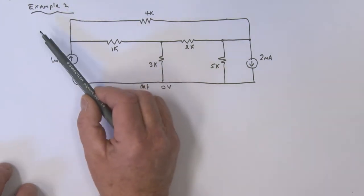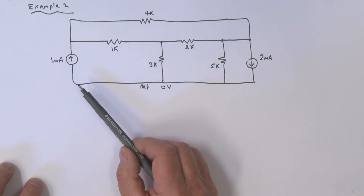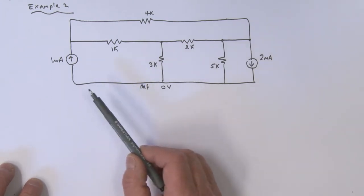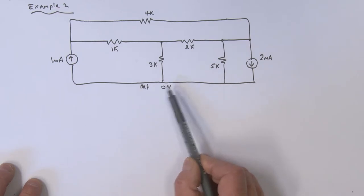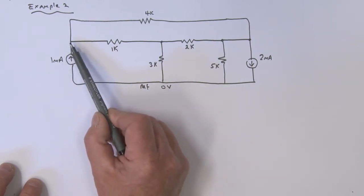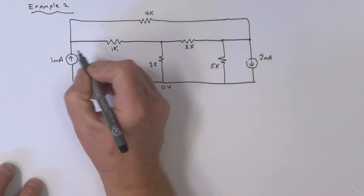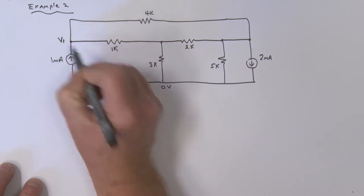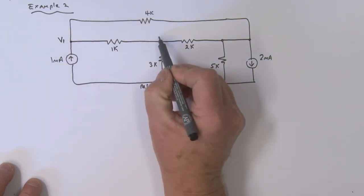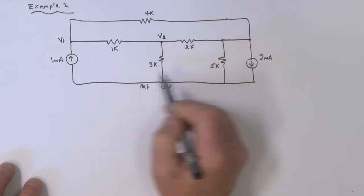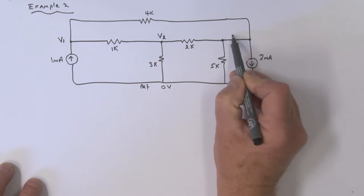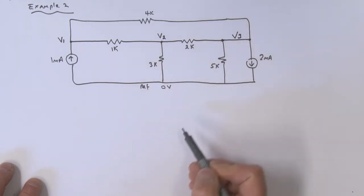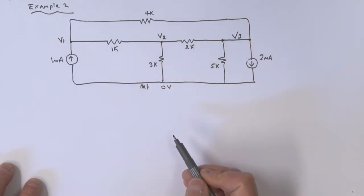Let's look at another example using nodal analysis. We've got a reference node set to zero volts. We're going to define a node here we'll call the V1 node, a node over here we'll call the V2 node, and then a node over here — this is all the same point — we'll call that the V3 node.